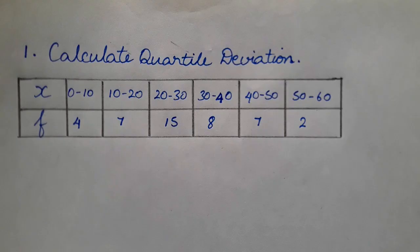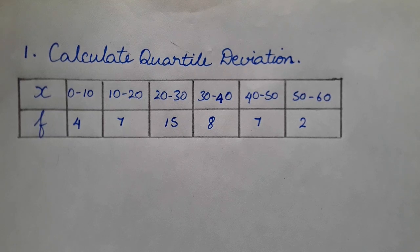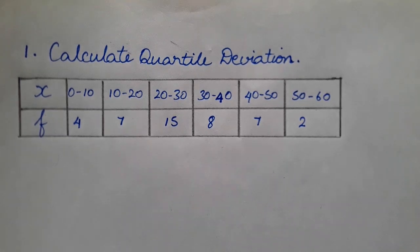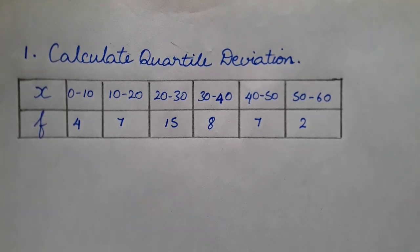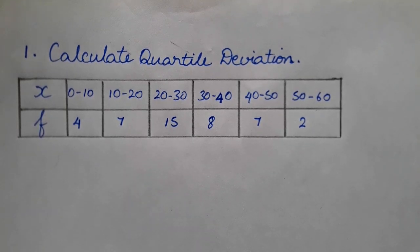Here is a question: calculate the quartile deviation. The data given is x and f values — 0 to 10 with frequency 4, and 10 to 20 with frequency 7, and 20 to 30 with frequency 15.